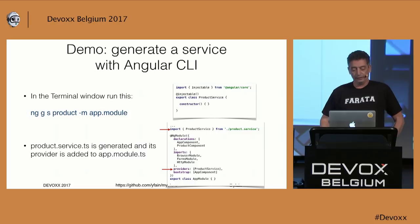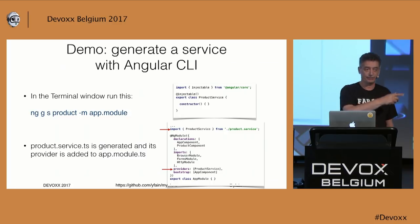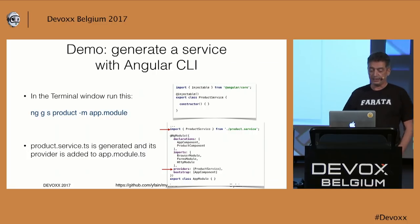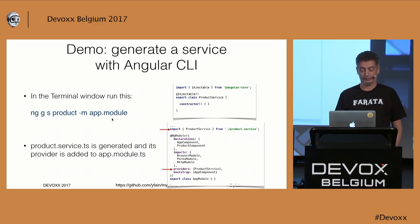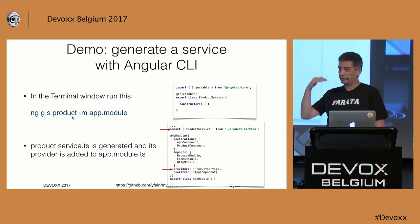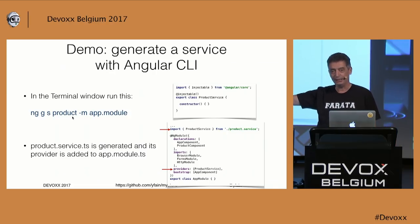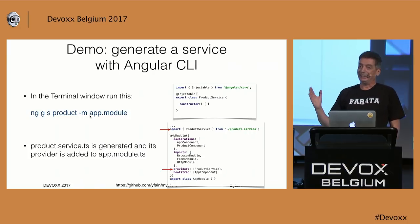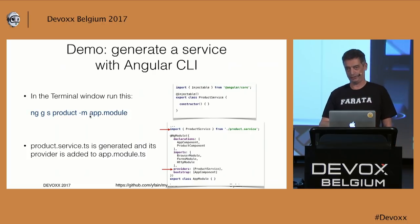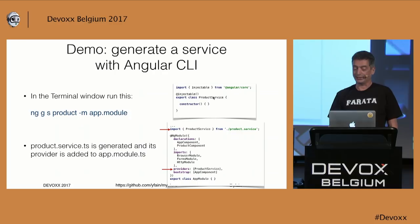To generate a service: ng g s product -m app.module — ng is Angular CLI, g means generate, s means service, and -m means add the provider line to the module definition. It will generate a class named ProductService and add it to the providers list in the module. Angular CLI will generate the class that looks like a boilerplate injectable service, and in the module it will add ProductService to the list of providers.